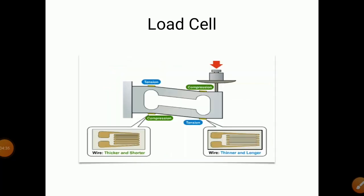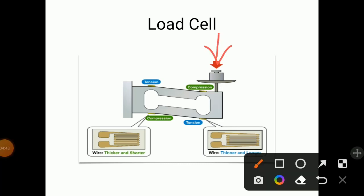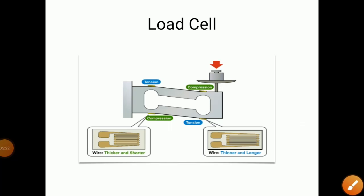Here, load is applied like a cantilever beam on one side. When you apply load, some of the strain gauges are in compression and few of them are in tension. Those in compression are thicker and shorter, while those in tension are thinner and longer. This is how the load cell works.